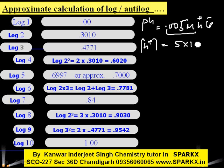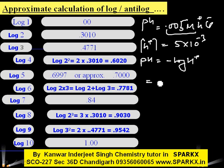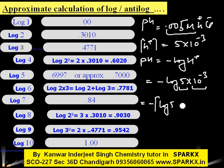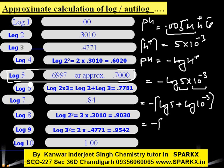For 0.005 molar HCl, the H⁺ concentration is 5 × 10⁻³. Since pH means negative log of H⁺, we calculate: pH = −log(5 × 10⁻³) = −(log 5 + log 10⁻³) = −(0.7 − 3.00) = 2.3. So the pH value is 2.3.